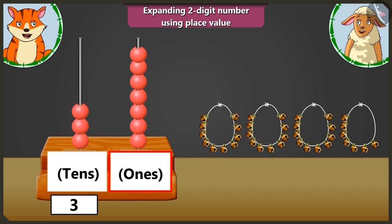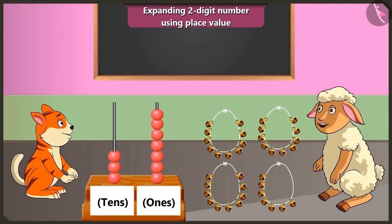Now in the ones box, there are seven beads. So we have to write seven. Now the number it makes is thirty-seven. Very good. Come on. Now let us go.